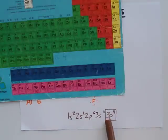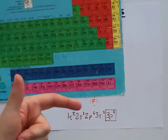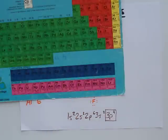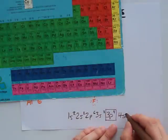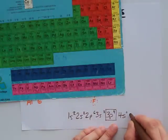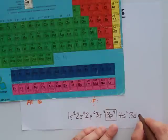Once you get into the third row, there's another sub-shell available to it. If you kept going here, you would end up with some 4s's, and there's also a 3d shell.